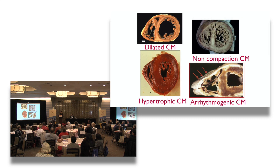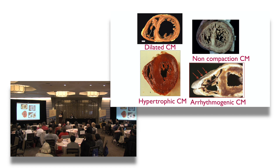Here's another picture on pathology of the different forms of cardiomyopathy: dilated up top, hypertrophic or thick pictured here, non-compaction or spongy here, and arrhythmogenic cardiomyopathy affecting the right side.